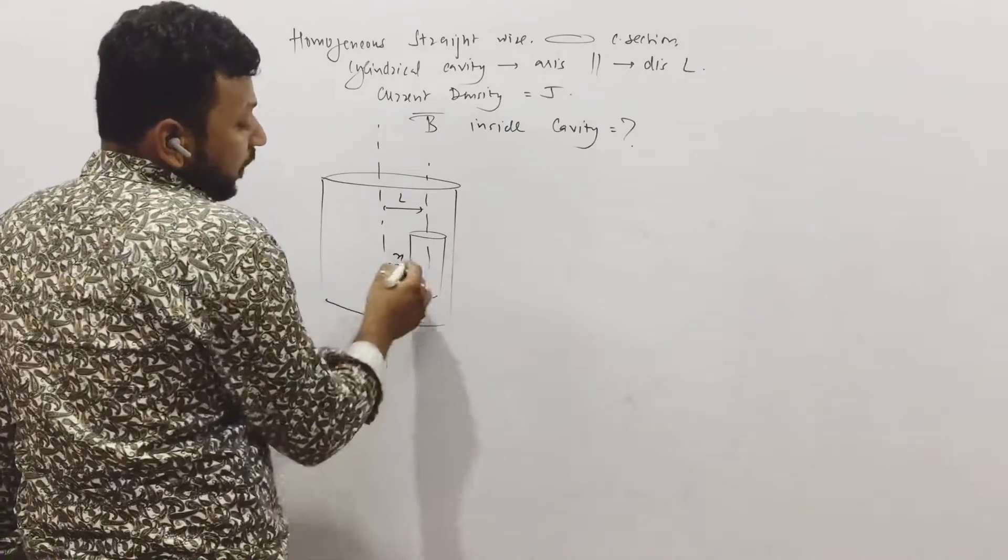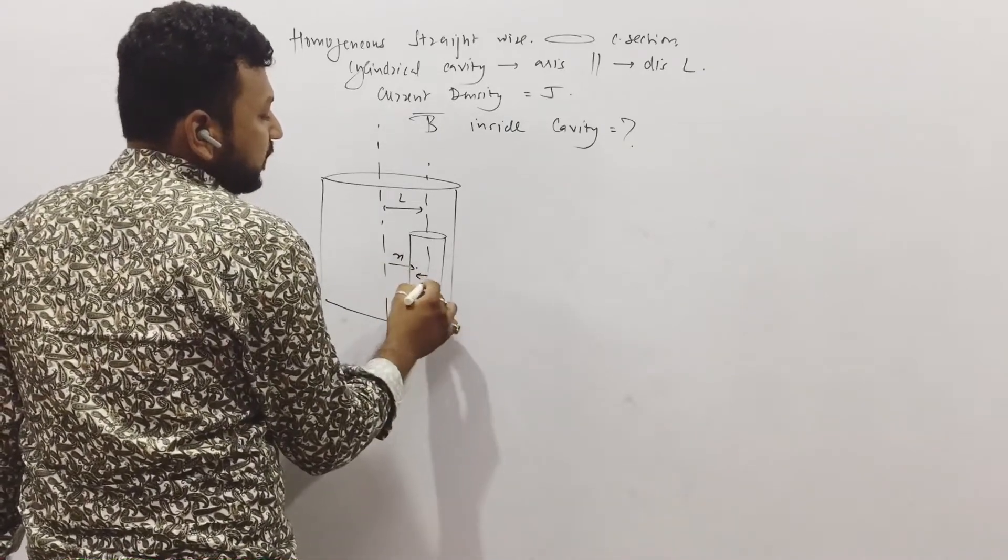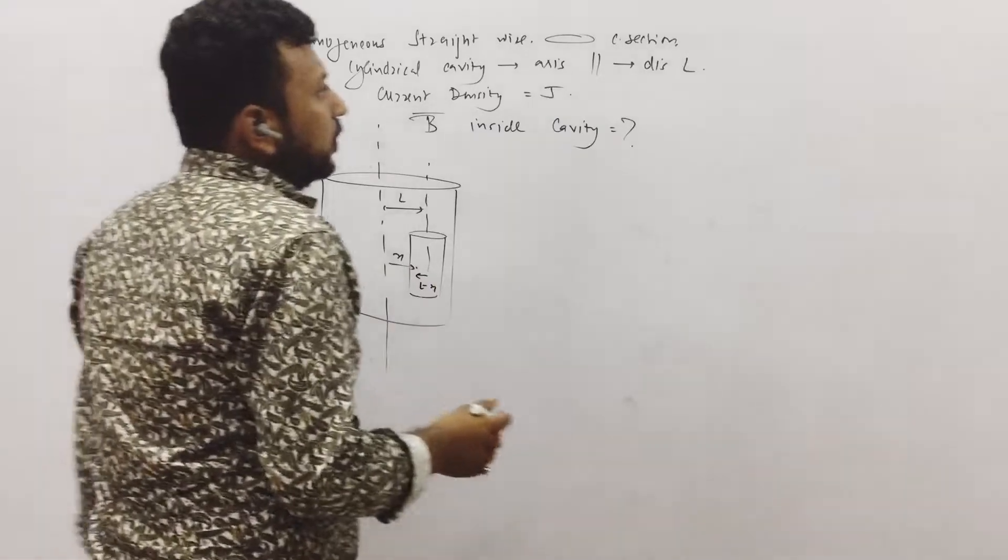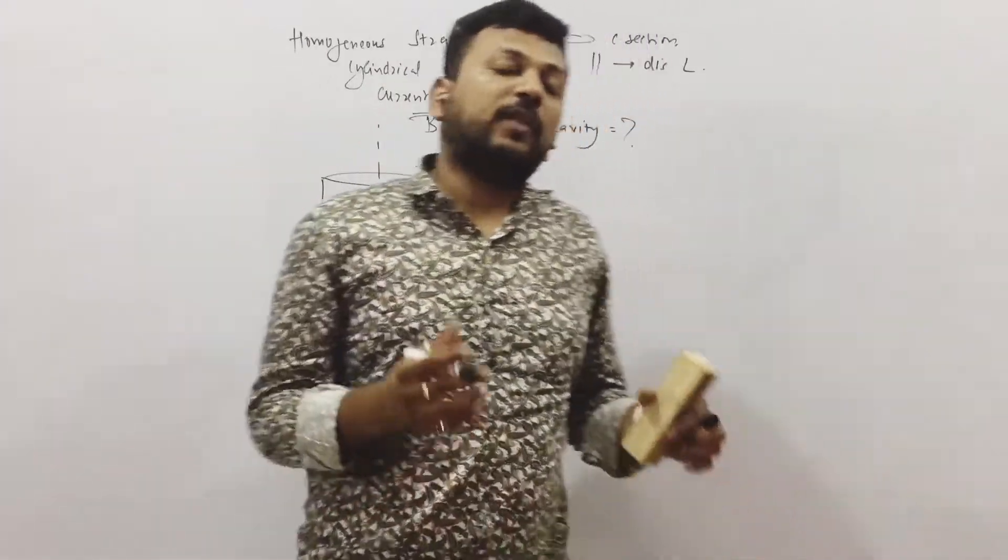Suppose I have a distance of X. If this distance is X, we can say this distance is L minus X. The basic point of doing the question of cavity is,